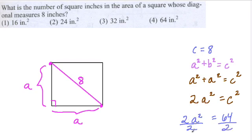We divide by 2 on both sides. Here, 2A squared divided by 2, the 2s cancel out. And A squared equals 64 divided by 2, which is 32. So A squared equals 32.